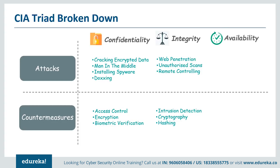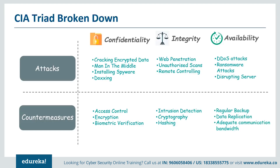Threats to availability include denial of service attacks or distributed denial of service attacks, where an enemy floods your computer and internet connection with traffic so that legitimate users can't access any information on the website. There are other attacks as well — for example, ransomware attacks that encrypt data on targeted computers so authorized parties cannot use it, and deliberately disrupting a server room's power supply so that servers go offline. A few ways you could protect yourself from these attacks are by using antivirus software, installing spyware detection and remover software, and using a firewall.